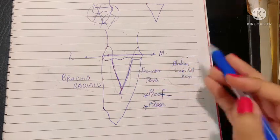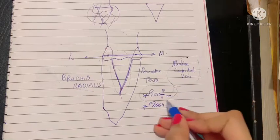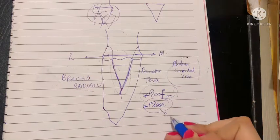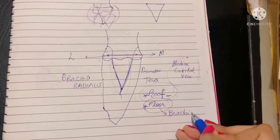That's the roof. The floor is made up of two muscles: the brachialis and the supinator muscles.